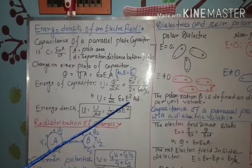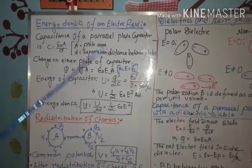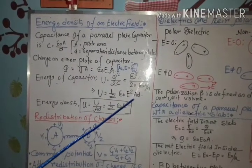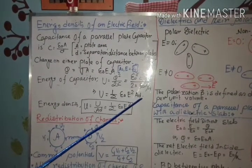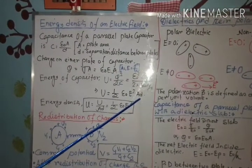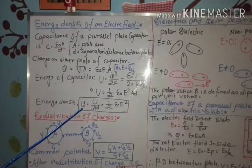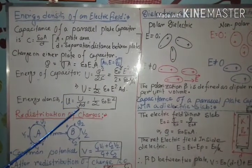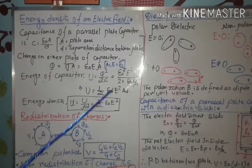Our aim is to determine energy density. Energy density is the energy per unit volume. The product A into D — that is the area of the plate and the separation distance between the two plates — is the volume of the capacitor. Therefore, energy density, denoted by small u, equals total energy divided by volume, which gives half epsilon naught E squared.